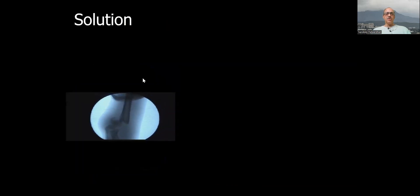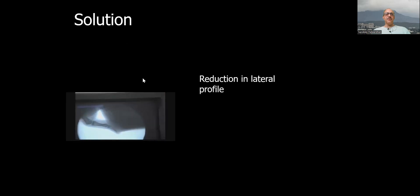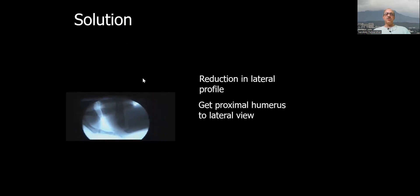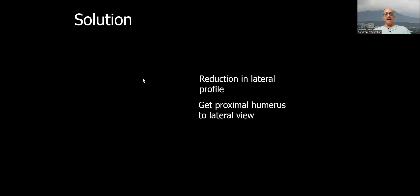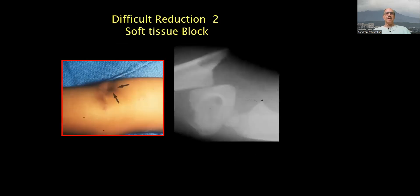The solution is rotate the proximal fragment into a lateral position and then reduce in that position so that you are reducing in lateral and reduction is then confirmed on the lateral profile itself. So get the proximal humerus to a lateral view and then reduce it, rotate the distal fragment and then lock it in flexion and pin.